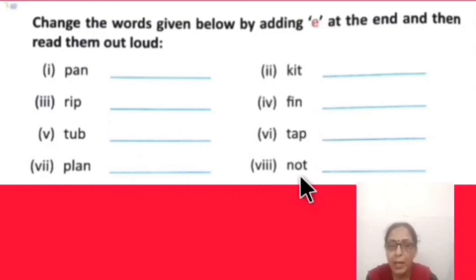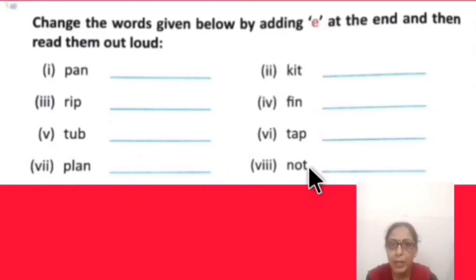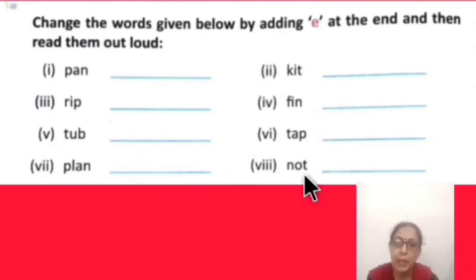Next word: N-O-T, 'not' — meaning no or nothing. When E is added at the end, the spelling becomes N-O-T-E, 'note' — like the special notes you write in your diary for PTM.